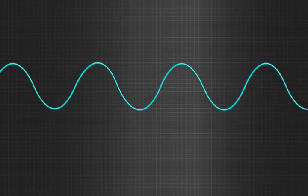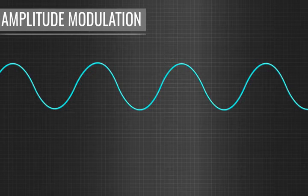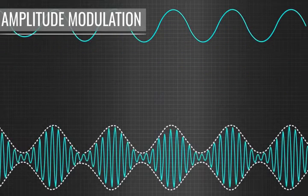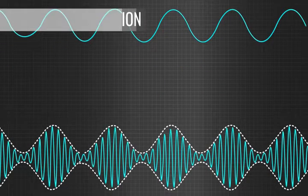In the same way, we can also achieve amplitude modulation. Here, the amplitude of the carrier signal is varied based on the value of the message signal.